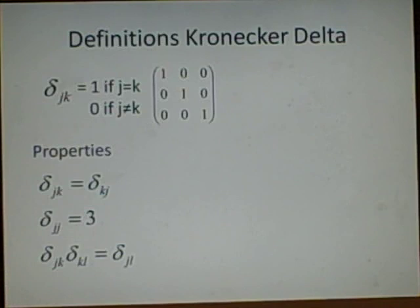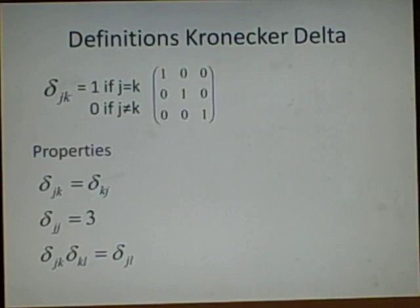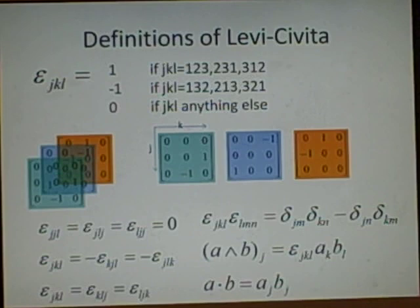And if we have an index repeated in the middle, so it's together, then delta jk times delta kl will equal delta jl. So we just remove the k's. Next one.